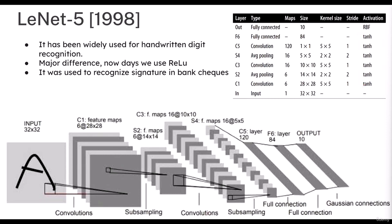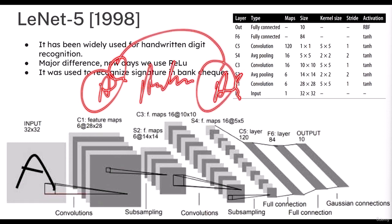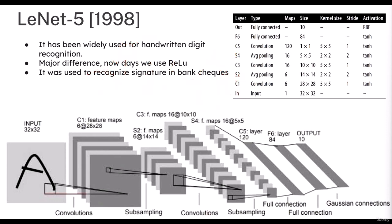Later on, people realized that the ReLU function works much better than tanh, and nowadays ReLU has become the de facto default activation function for any architecture. These algorithms were used in recognizing signatures on bank checks — for example, people write the letter 'a' in different ways, and manually checking these was time-consuming, so these networks were developed.